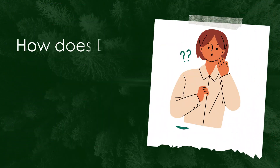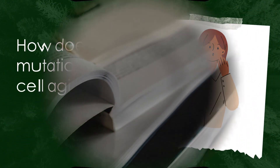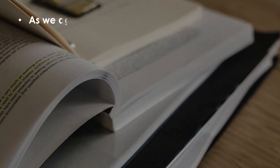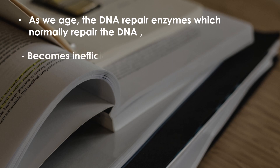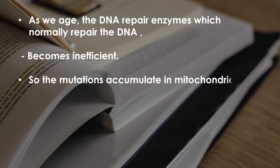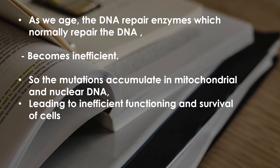How does DNA mutation cause cell aging? As we age, the DNA repair enzyme which normally repairs the DNA becomes inefficient, so mutations accumulate in the mitochondrial and nuclear DNA. This leads to inefficient functioning and survival of cells, hence the cell ages.